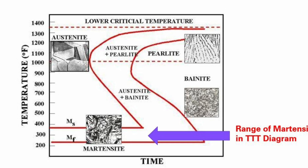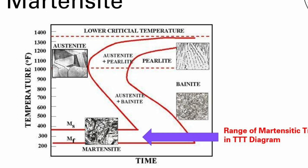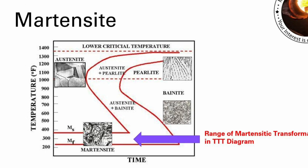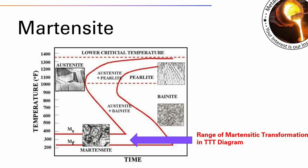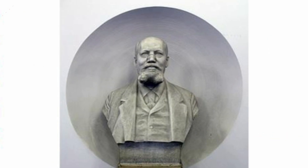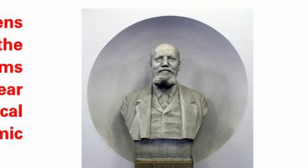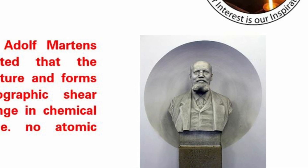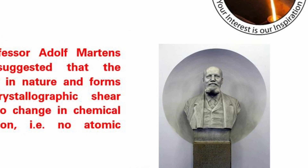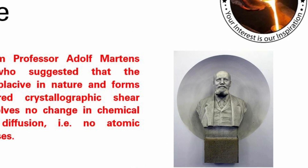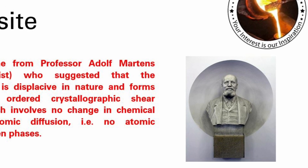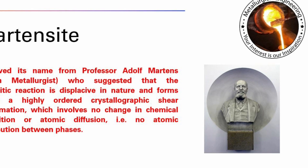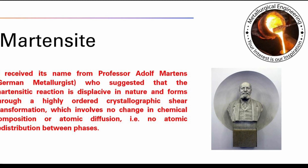Examples: Ferrite and Pearlite. In this figure you can see the range of Martensitic transformation in steel indicated by the purple color arrow. It received its name from Professor Adolf Martens, a German metallurgist, who suggested that the Martensitic reaction is displacive in nature and forms through a highly ordered crystallographic shear transformation, which involves no change in chemical composition or atomic diffusion, i.e. no atomic redistribution between phases.